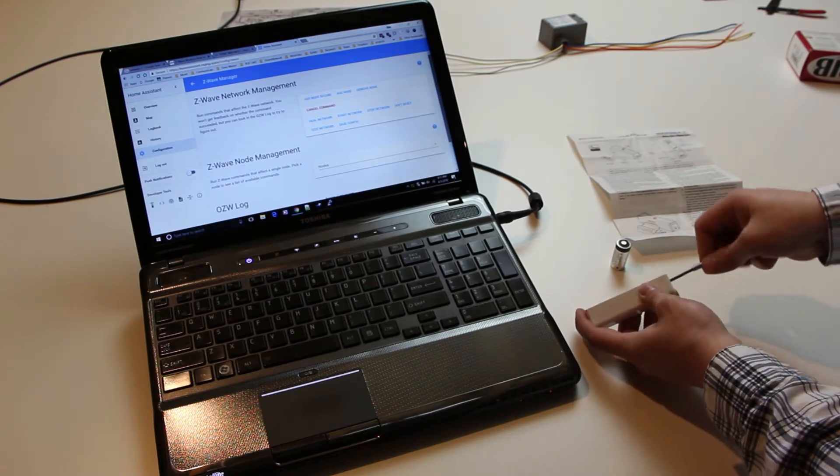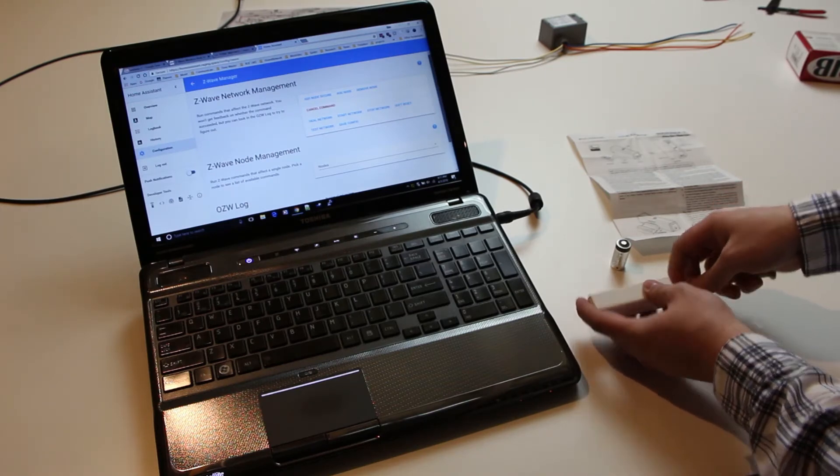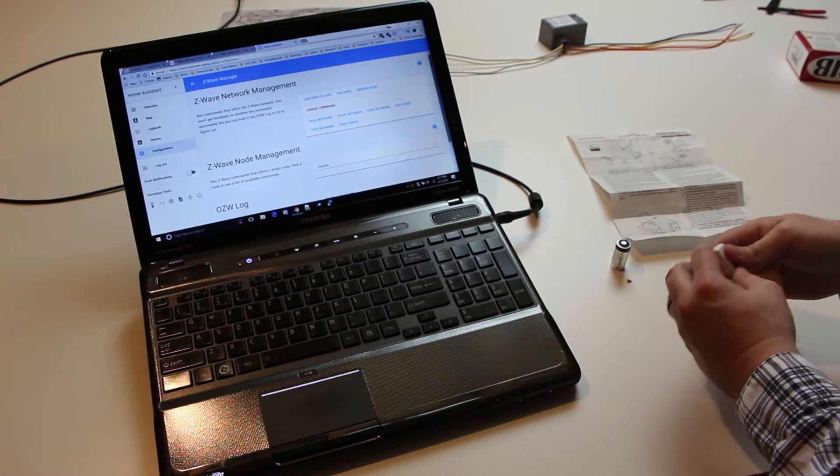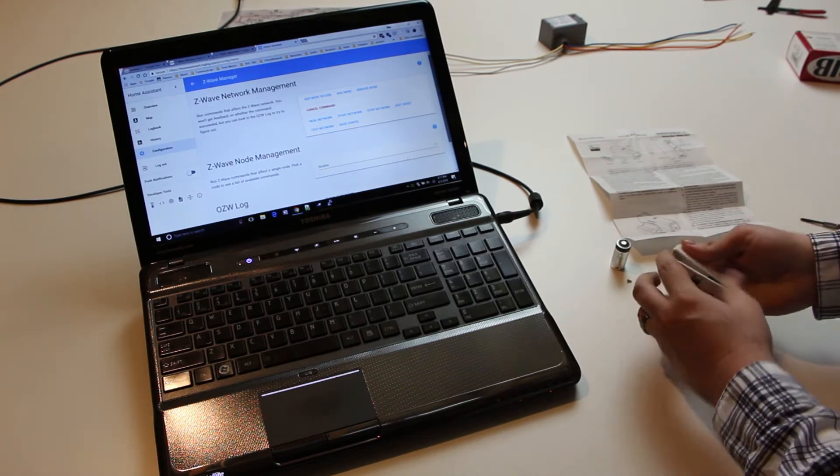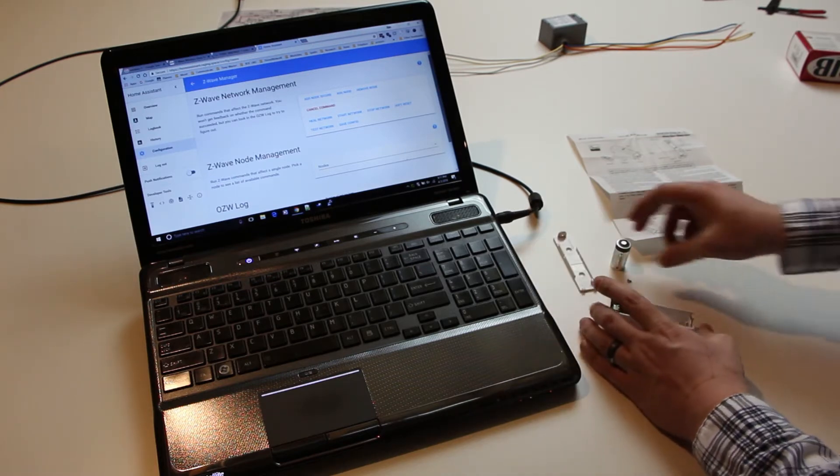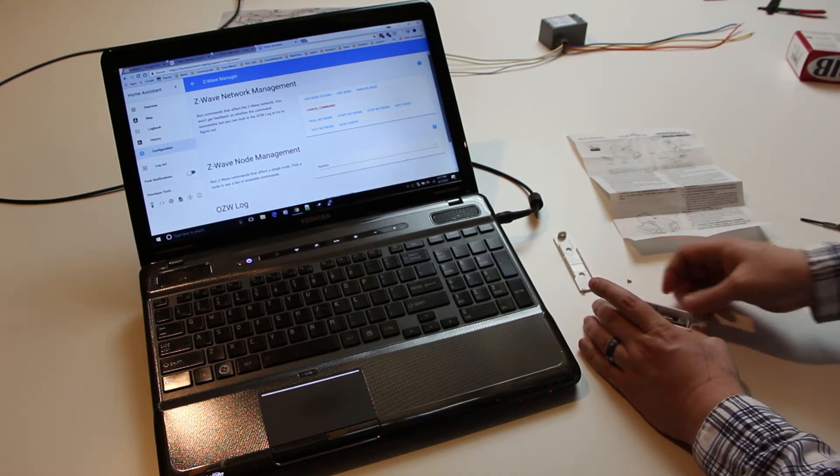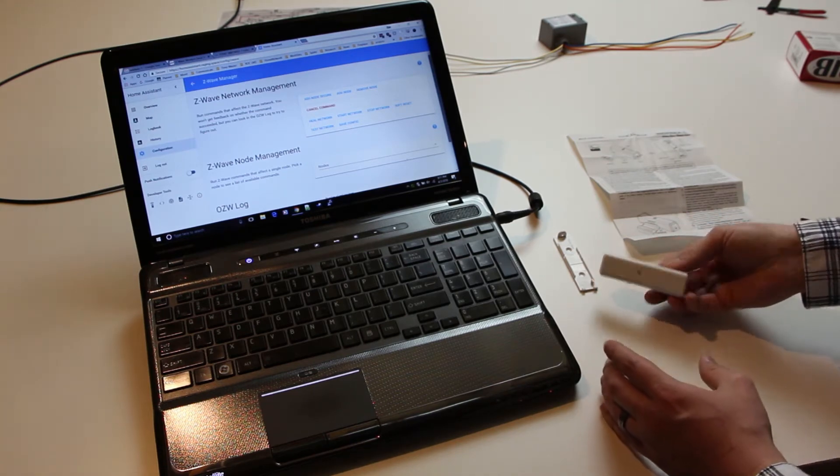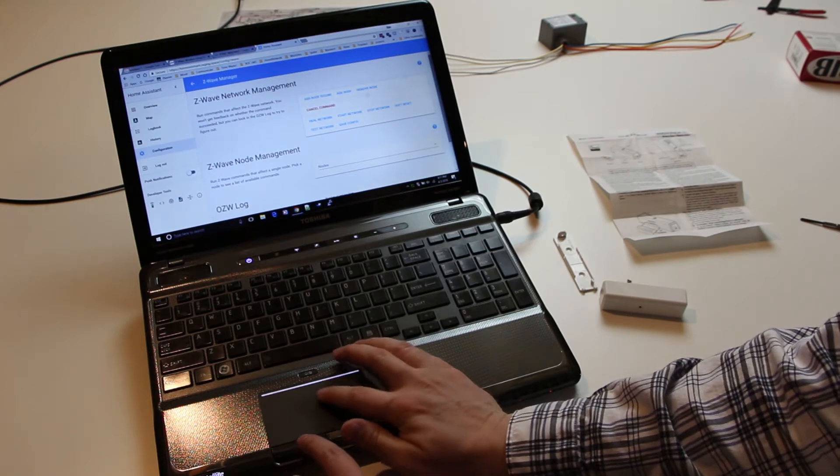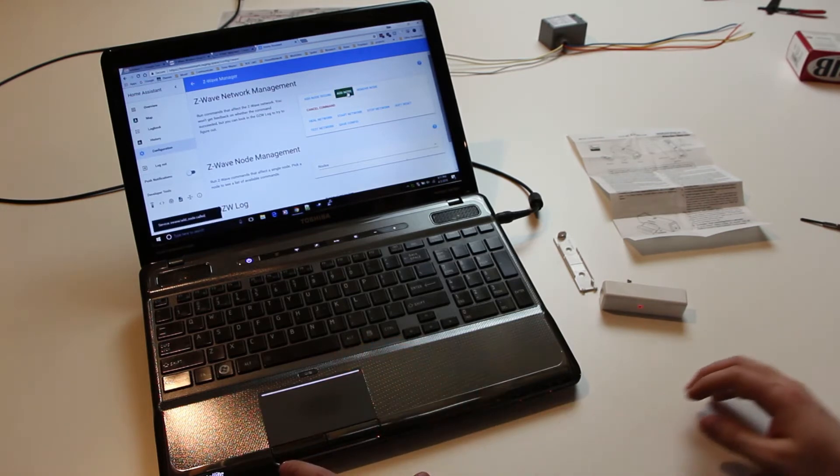Looks like just putting the battery in is enough to get this to include to the network. Pull that cover off. See, it's a battery. We do add node. I'm going to assume that worked.